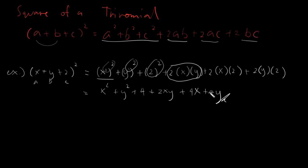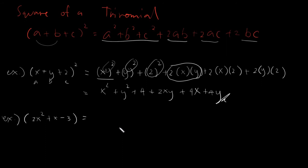And this would be our square of trinomial — that would be it, it's actually quite easy. Let's have another example. Say we have (2X² + X − 3) squared. Remember that when you are substituting, you always take the sign or operation before the term. So our A would be 2X², our B would be X, and our C would be negative 3.